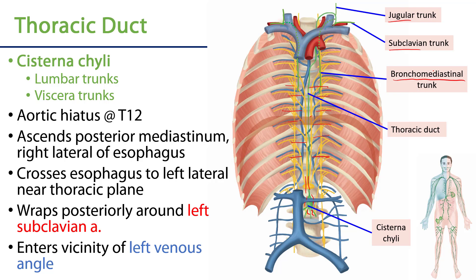It's quite variable. Keep in mind on the right side we have all of these trunks as well: in association with the subclavian vein we'll have a subclavian trunk; with the internal jugular vein we'll have that jugular trunk; and on the right side of the trachea, from the root of the lung ascending up, the right broncho-mediastinal trunk. Again, these can either drain into the right lymphatic duct or independently into the vicinity of the right venous angle.